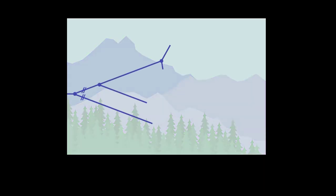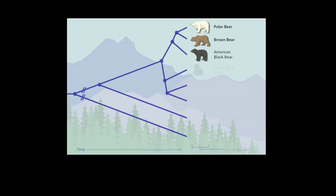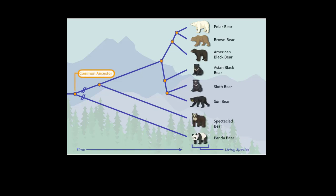Tree diagrams are a type of model. The lines show evolutionary relationships, and the nodes show when species lineages diverged from a common ancestral population. Species whose lineages split more recently are more closely related than species whose lineages split farther back in time.